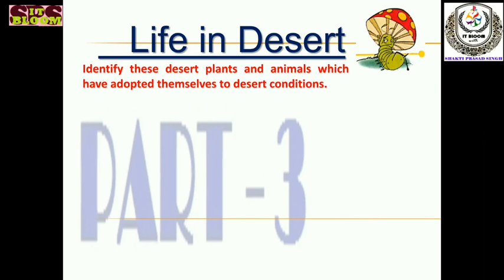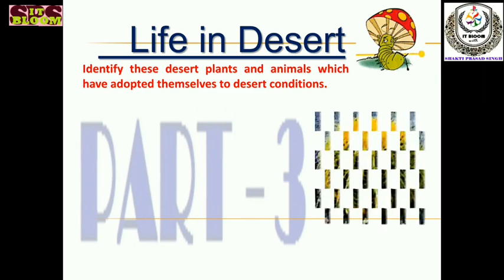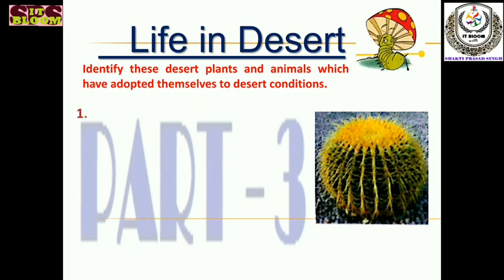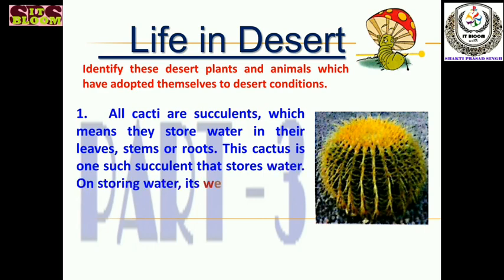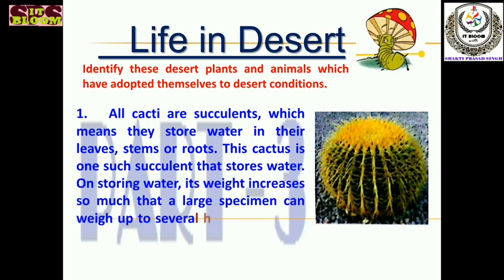We will identify desert plants and animals which have adapted themselves to desert conditions. Here is the first one — the cactus. All cacti are succulents. Succulent means the water is stored in their leaves, roots, or stems. This cactus is one such succulent that stores water.